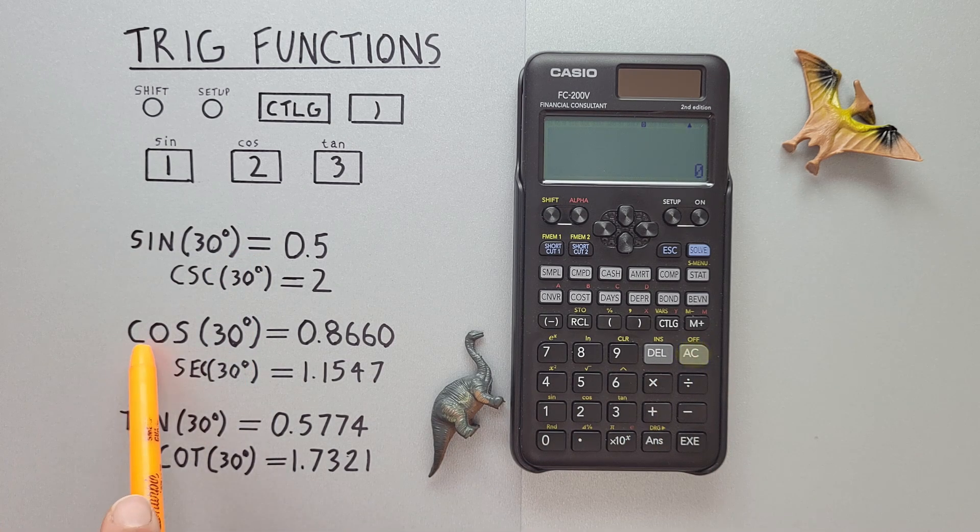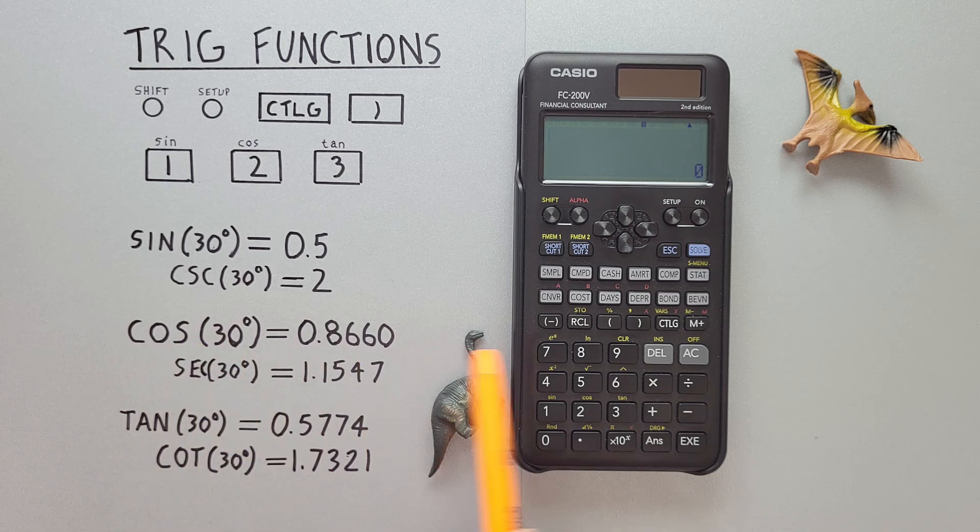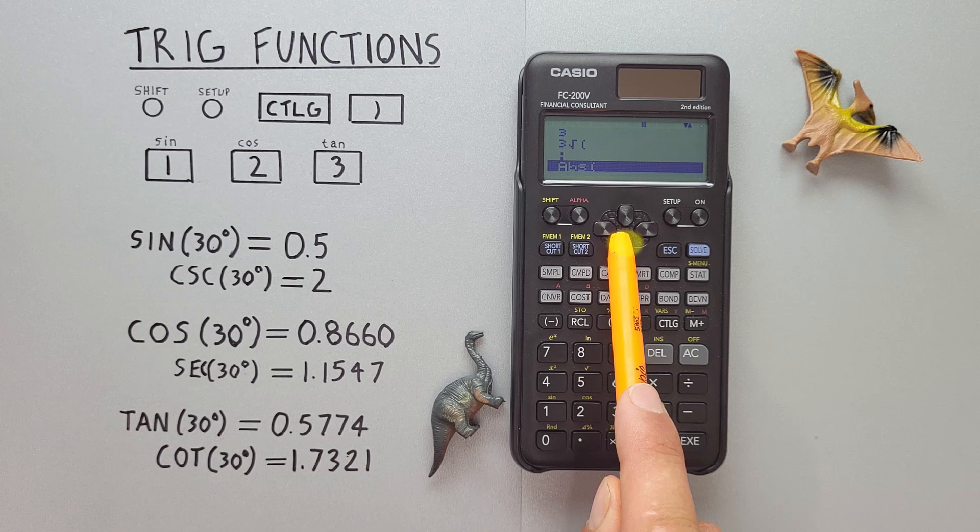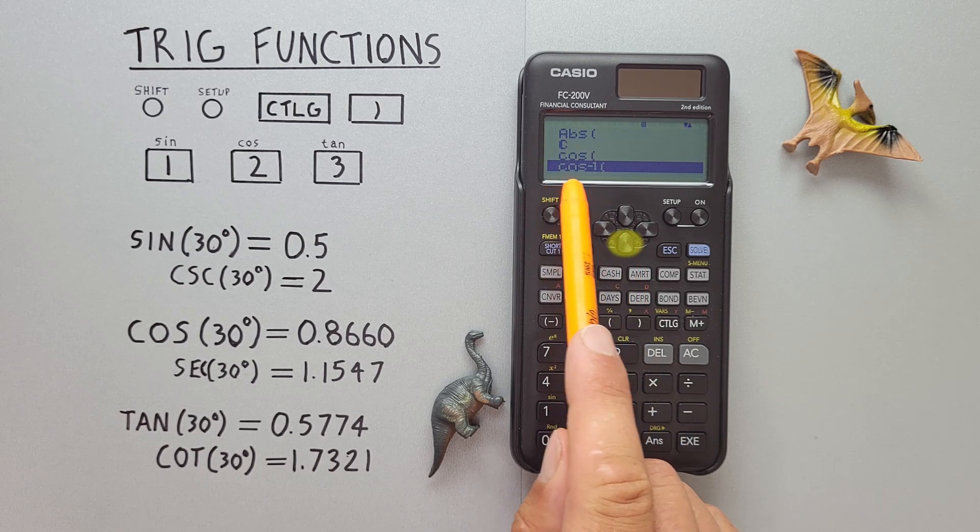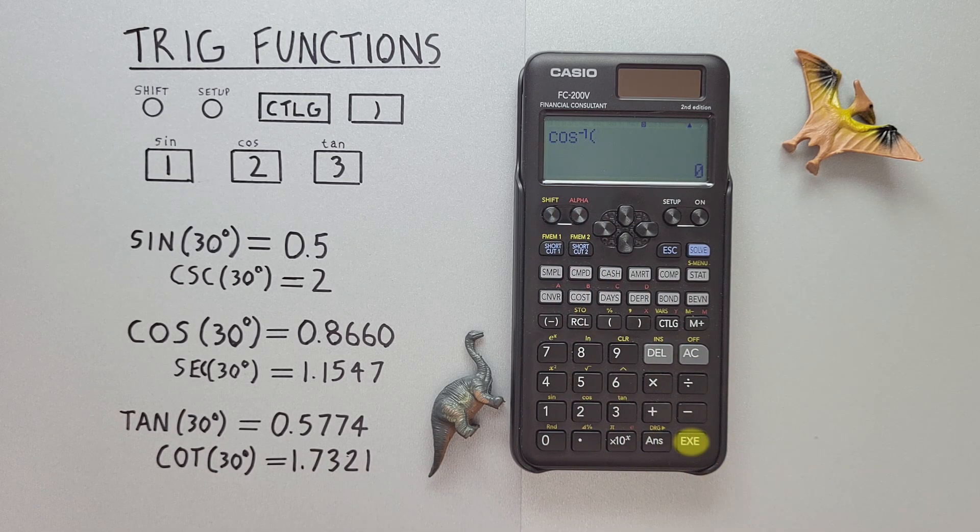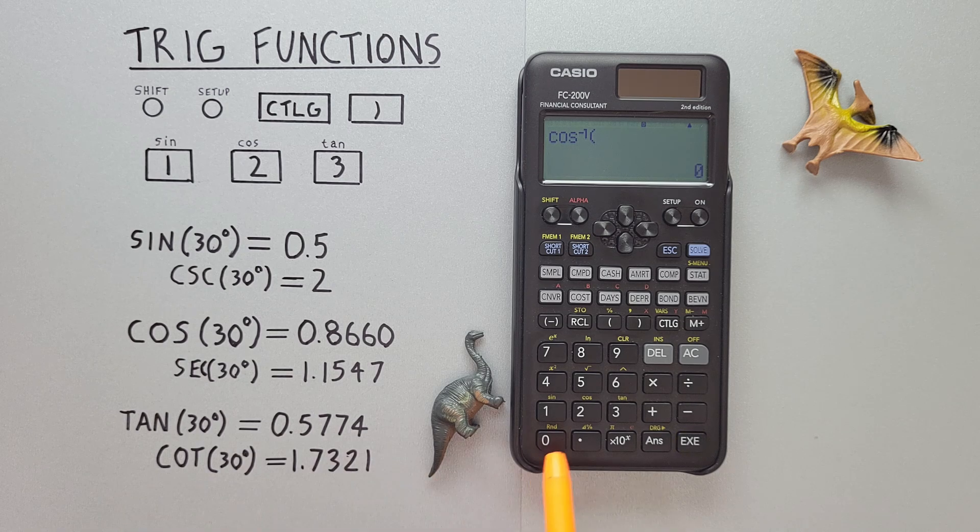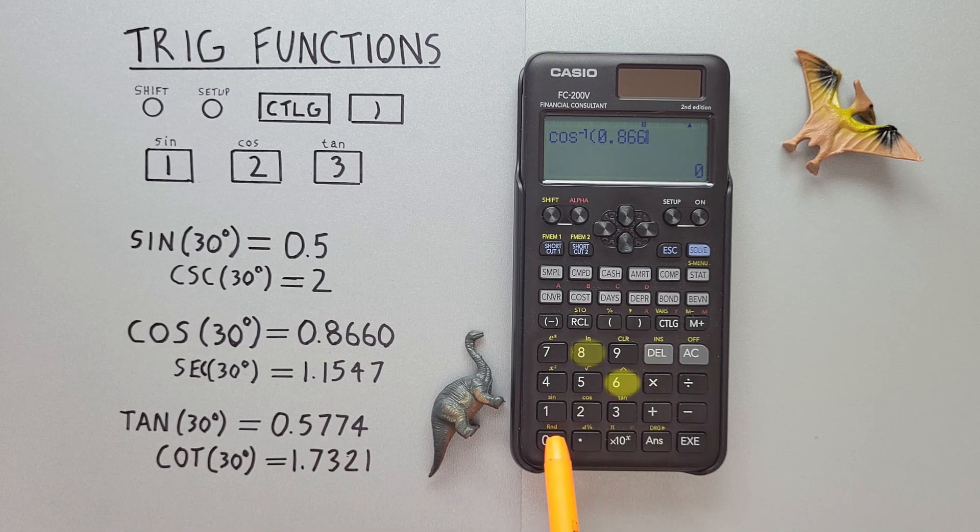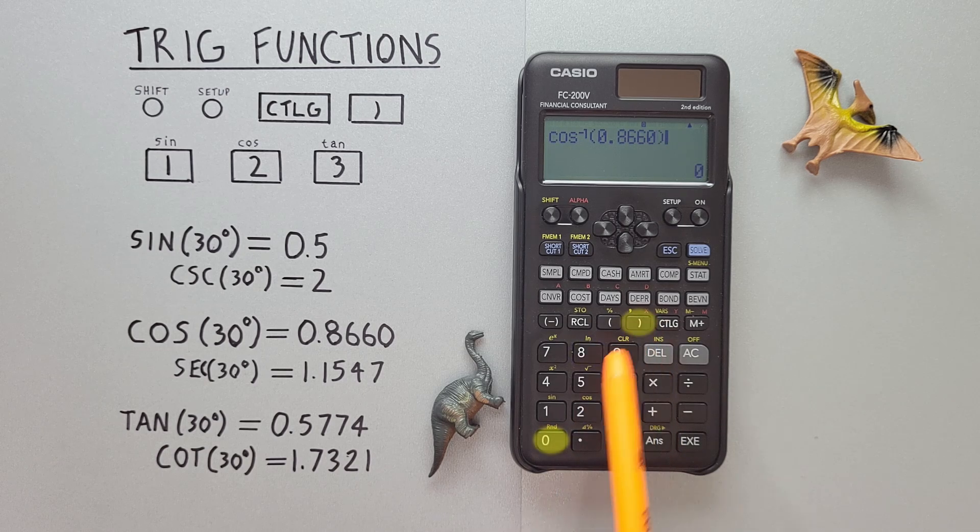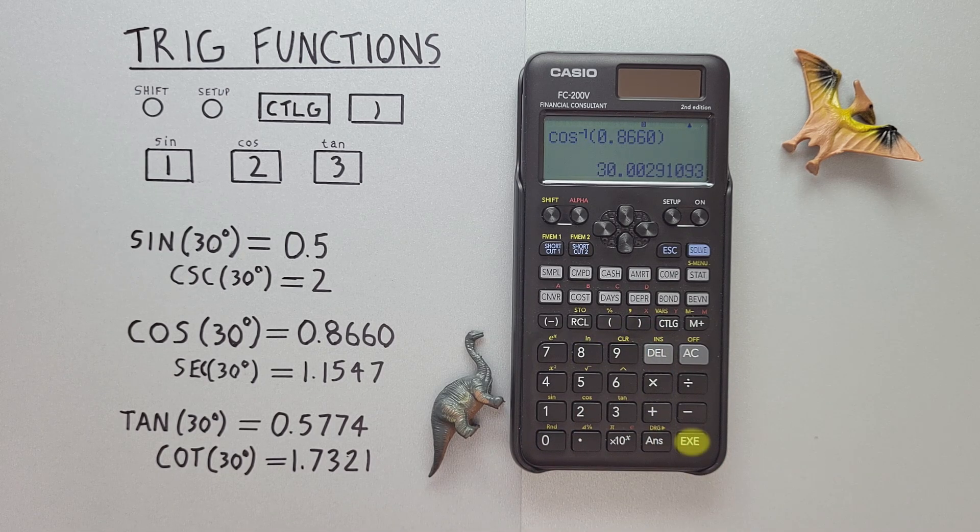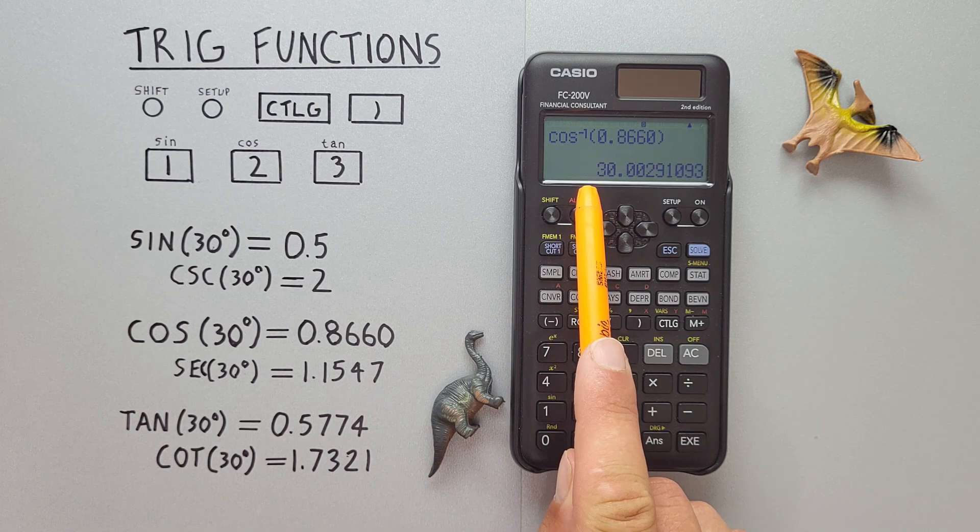For arc cos, we do the same. We go to the catalog key, scroll down until we see cos minus 1, select it. And we'll enter our 0.8660, close our bracket, and hit exe. And get what would round to 30 degrees.